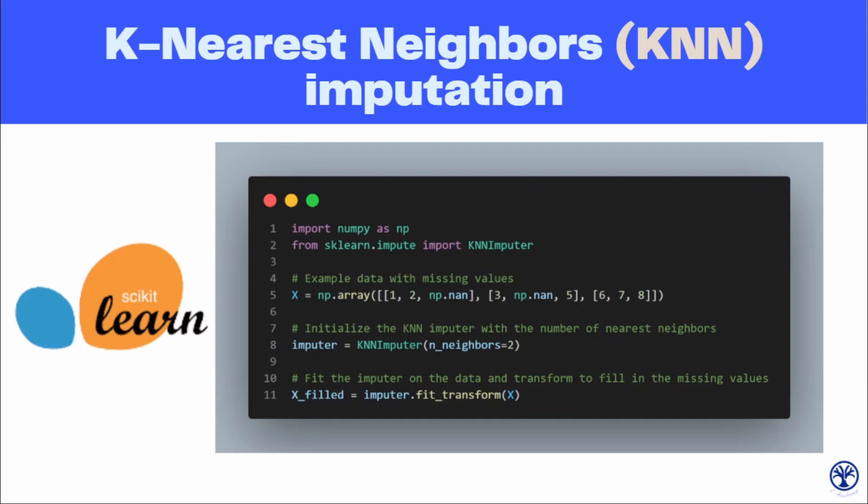We have covered the two advanced techniques for imputing missing data: MICE and KNN. If you want us to cover more advanced techniques for imputing data, please write down in the comment section below. We'll meet in the next video.